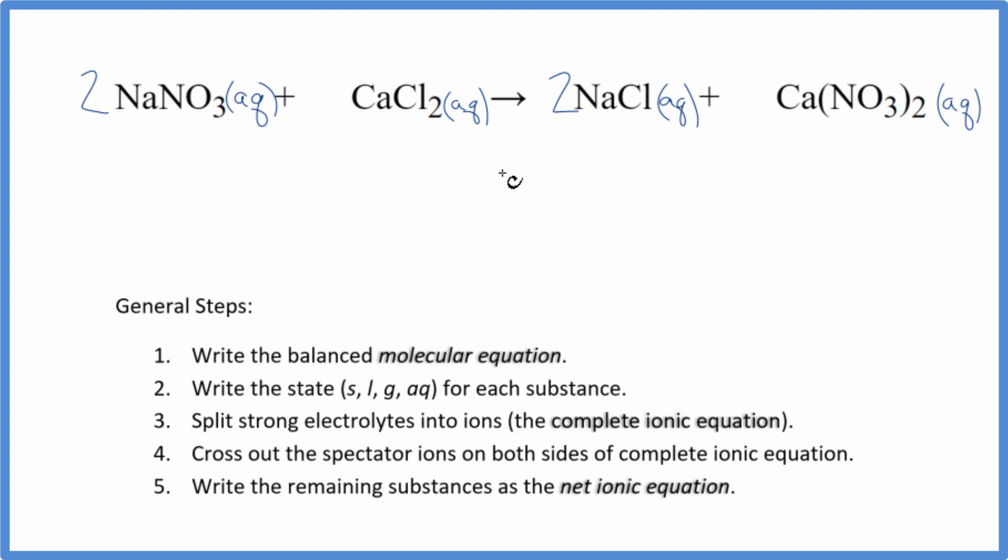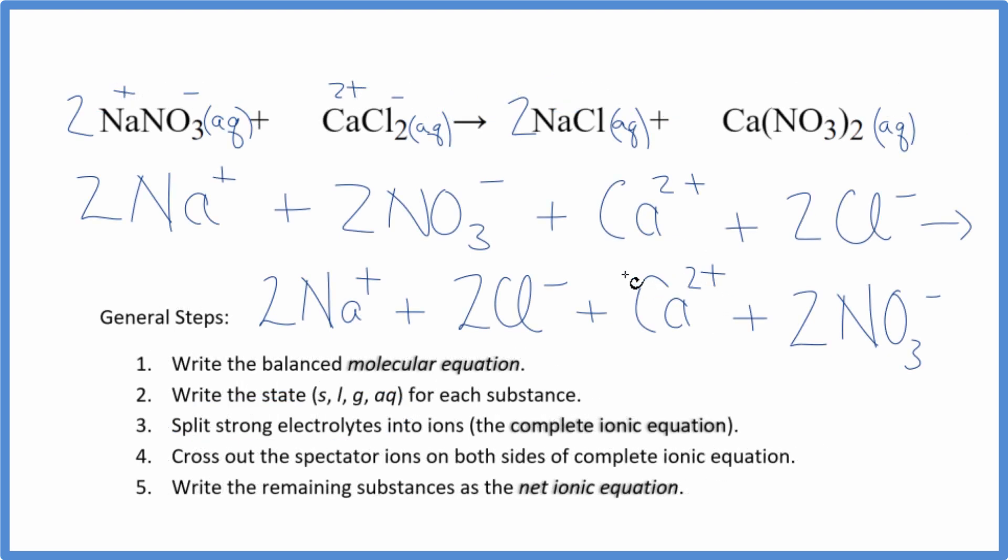But let's just go on here and do this real quick. Let's split the strong electrolytes into their ions, and we'll see why there's no reaction here. So I've split all of these compounds up into their ions, and all of these will be aqueous. So we have all these aqueous ions here in a net ionic equation.